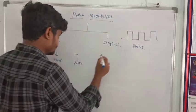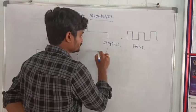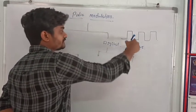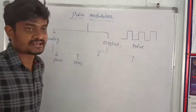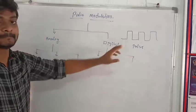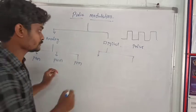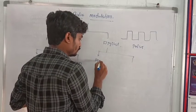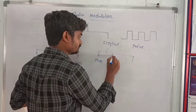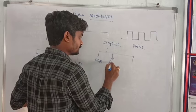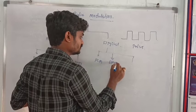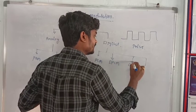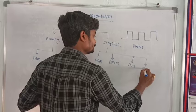For digital modulation techniques, depending upon the carrier pulse signal, we have: Pulse Code Modulation (PCM), Differential Pulse Code Modulation (DPCM), Delta Modulation, and Adaptive Delta Modulation.